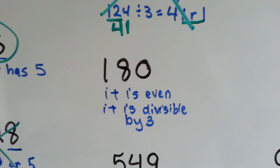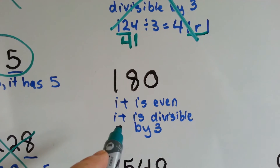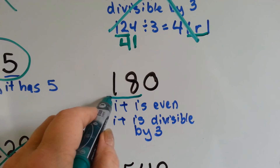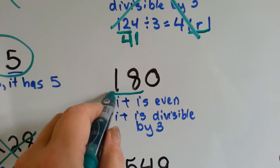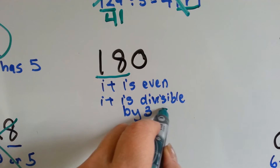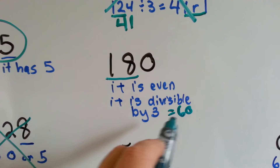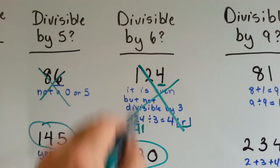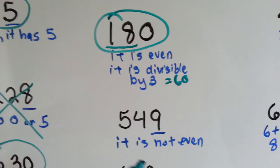How about 180? It's an even number — it ends in a 0. Is it divisible by 3? How many 3s can you put in 18? 6. 6 times 3 is 18. We add the 0, and it's divisible by 3 because it equals 60 — 180 divided by 3 is 60. So yes, this one fits. It is divisible by 6: it's even and divisible by 3.